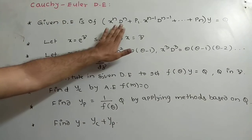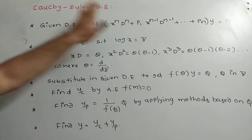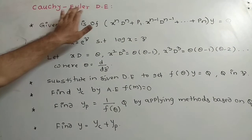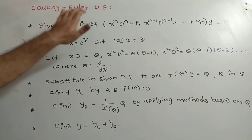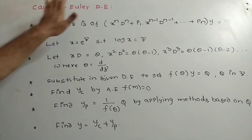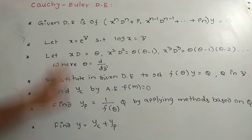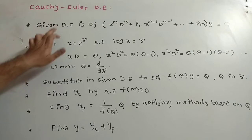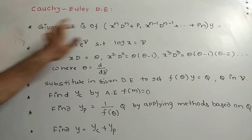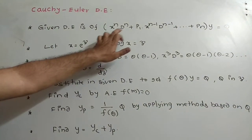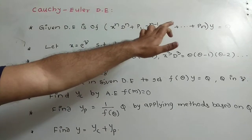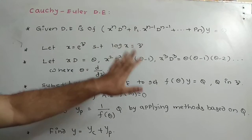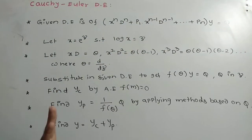If such a type of model is available, it was given by Cauchy and Euler, both mathematicians. The equation should be in this particular form where p1, p2, and so on up to pn are all coefficients, and q is a function of x.